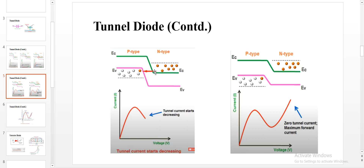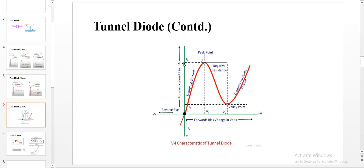As the voltage is further increased, electron tunneling from the N side to the P side slowly reduces and the current reaches the valley region. When the applied voltage is increased largely, there is no overlap of valence band and conduction band, and the diode now acts as a normal PN junction diode, which starts conducting forward current once the barrier potential is crossed.